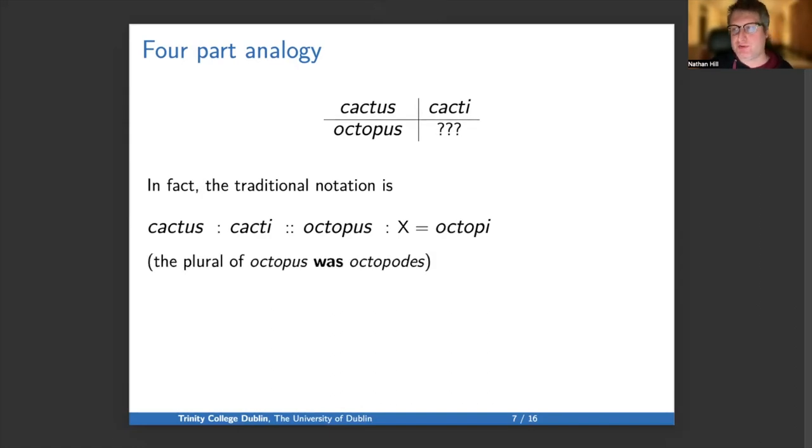Because octopus is a Greek third declension noun, the plural in Greek would have been octopodes. So it's understandable that I didn't remember that when I was formulating my sentence. Of course, I could have just used the standard English plural and said octopuses, but this analogical plural octopi is quite common.